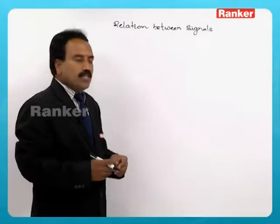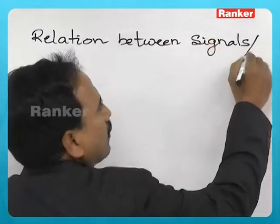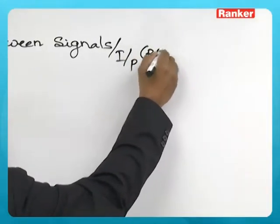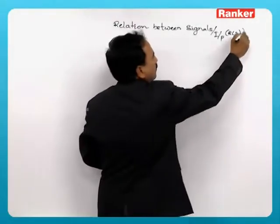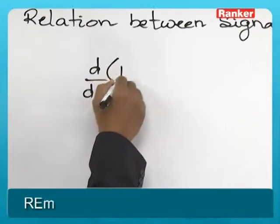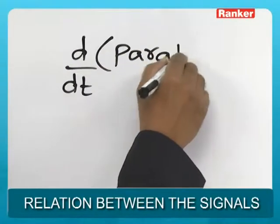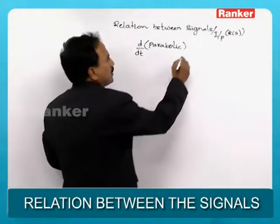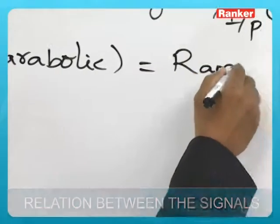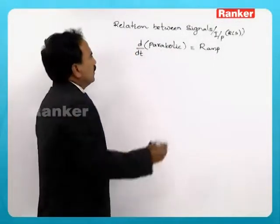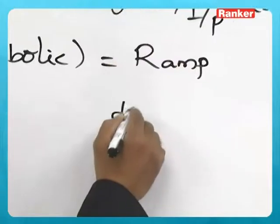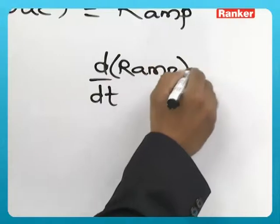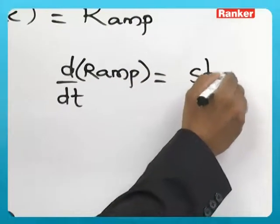The relation between signals: d/dt of a parabolic signal is a ramp signal, d/dt of a ramp signal is a step signal, and d/dt of a step signal is an impulse signal.